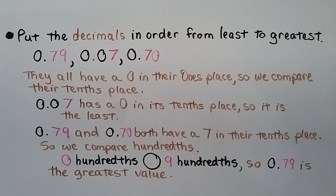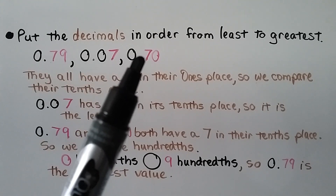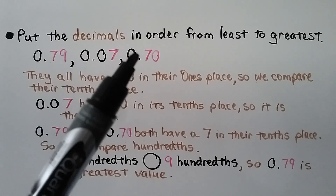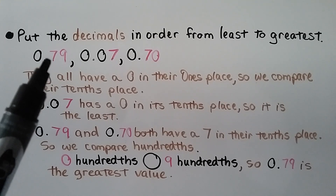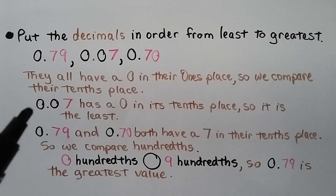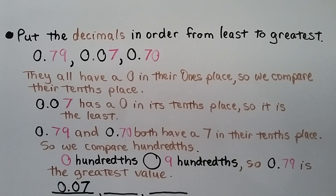Put the decimals in order from least to greatest. We have seventy-nine hundredths, seven hundredths, and seventy hundredths. They all have a zero in the ones place, so we compare the tenths place: seventy-nine hundredths has a seven, seven hundredths has a zero, and seventy hundredths has a seven.